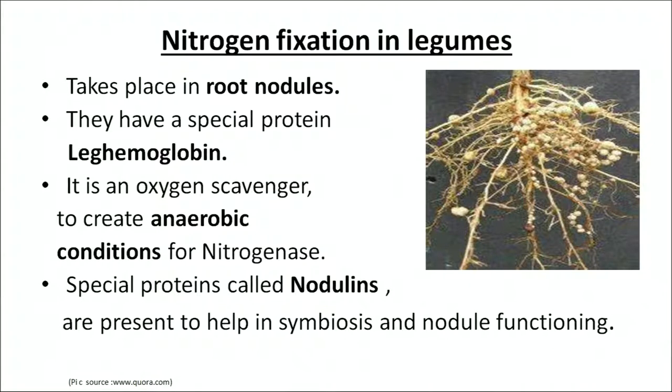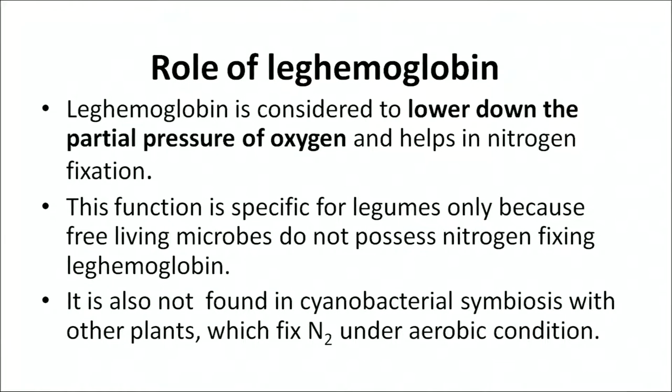Apart from leghemoglobin, special proteins called nodulins are also present, which help in symbiosis and in the proper functioning of root nodules. Leghemoglobin lowers the partial pressure of oxygen, and this is how it helps in nitrogen fixation. This function is specific only to legumes, because free-living microbes do not possess leghemoglobin. It is also not found in cyanobacterial symbiosis with other plants, which fix nitrogen under aerobic conditions — because nitrogenase functions only under anaerobic conditions.